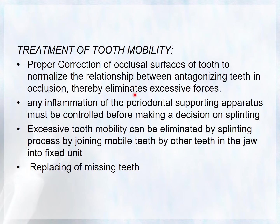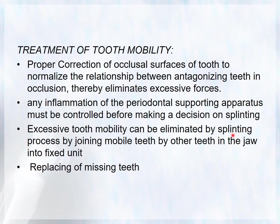Any inflammation of the periodontal supporting apparatus must be controlled before making a decision on splinting. The first line of treatment is scaling and root planing; the inflammation should resolve and the patient recalled after two weeks. If excessive mobility remains after these procedures, it can be eliminated by the splinting process — joining mobile teeth to other teeth in the jaw into a fixed unit. Otherwise, extraction and replacement may be considered.